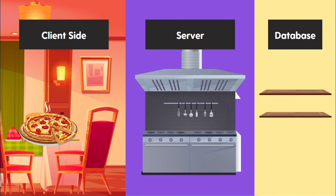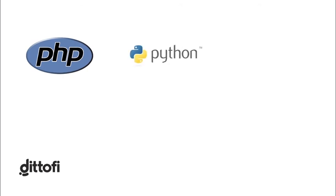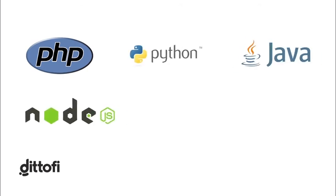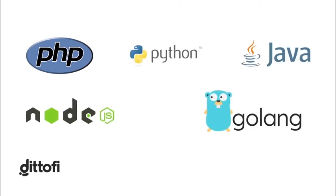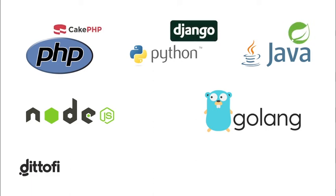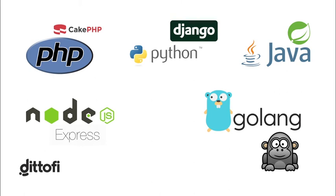On the back-end, there are many different technologies we could use, including PHP, Python, Java, Node.js, and Golang, amongst many others. In addition, there are also frameworks such as Cake PHP, Django, Spring, Express, and Gorilla. These frameworks are tools used by developers to speed up app development.